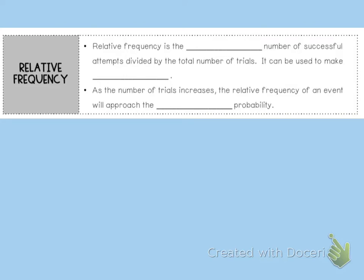So relative frequency, this is part two of our experimental and theoretical probability. Relative frequency is the total number of successful attempts divided by the total number of trials. So it can be used to make predictions.